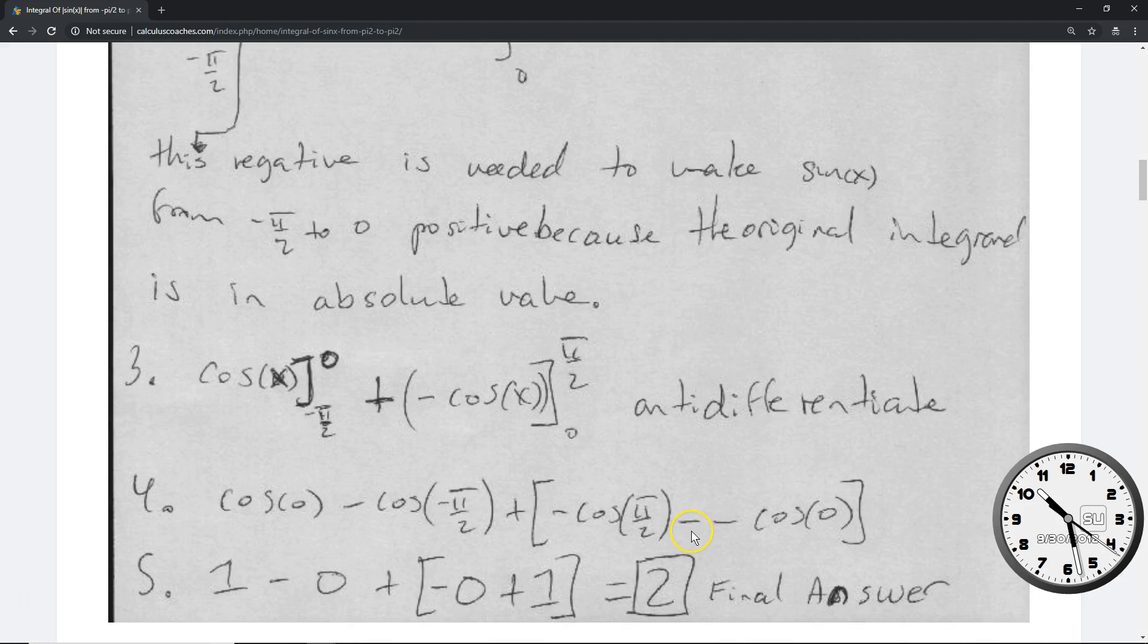Then you do subtraction, so you do minus, and again, be very careful now. You're going to have minus a negative, again, cosine of 0. So when you look at these two negatives right here, the second negative in the middle comes from negative cosine of x up here. The first negative comes from the fact that you have to subtract when you do the evaluation of the limits.